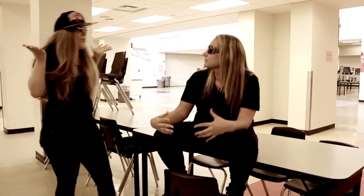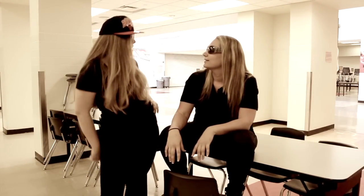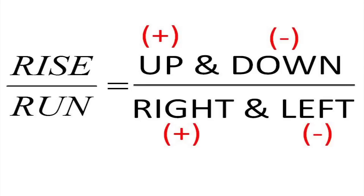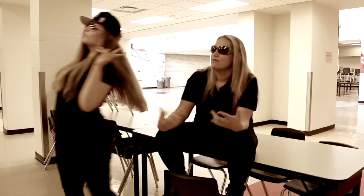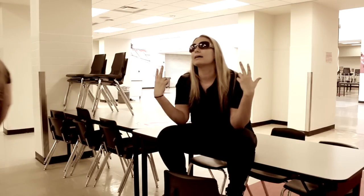Hold up, wait a minute, don't forget about the negatives. Moving down and left is where you switch the initial signage. Remember, my kids, when finding the slope from a graph, use rise over run. Now let's continue.